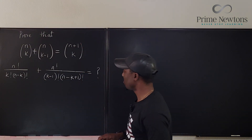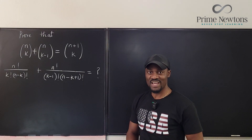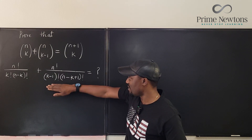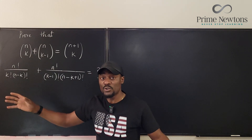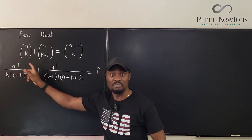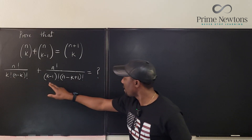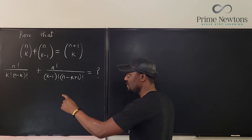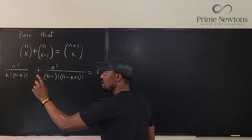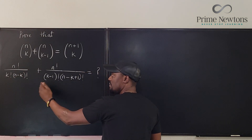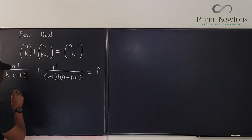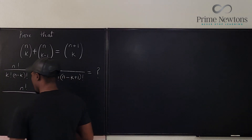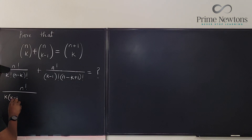Suppose we don't know yet but want it to end up as C(n+1,k). In an exercise like this, you want to create things here that look exactly like what's on the other side so you can factor them. Already I can see n factorial on top of both terms. But the denominators don't look alike. Since k factorial is one step higher than (k-1) factorial, I can rewrite k factorial as k times (k-1) factorial. So I have n factorial over k times (k-1) factorial times (n minus k) factorial.